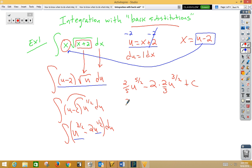And it's not really u, so I have 2 fifths x plus 2 to the 5 halves minus 4 thirds x plus 2 to the 3 halves plus c. Let's do another example.